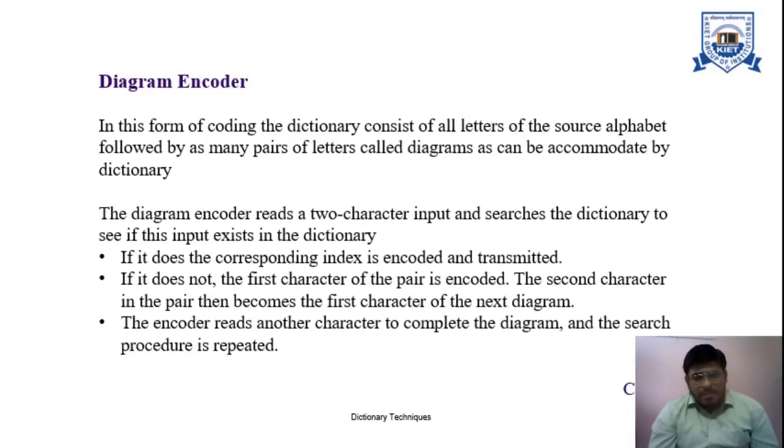The diagram encoder reads two-character input at a time and searches that particular pair of character input in the dictionary which we have already built or which is already given to us.